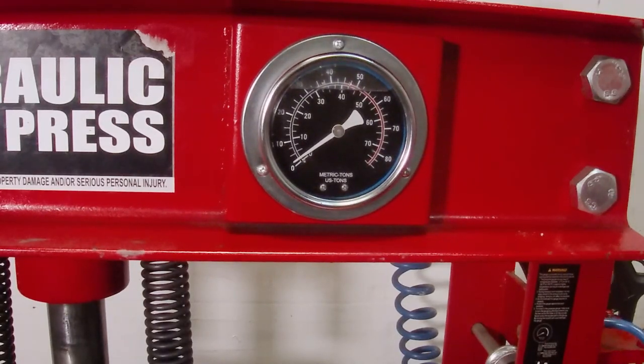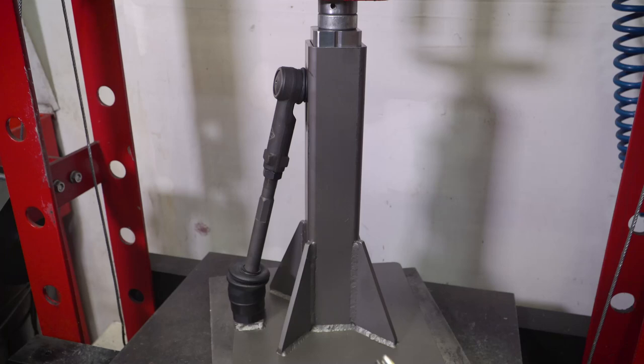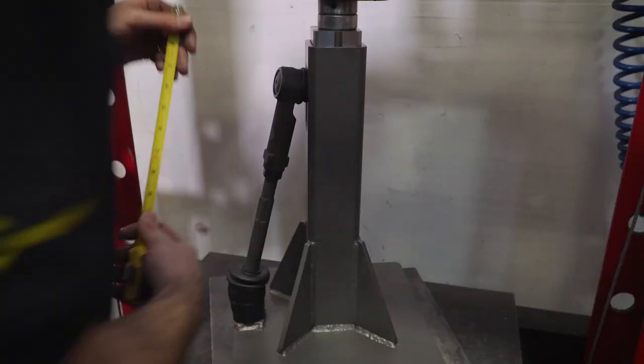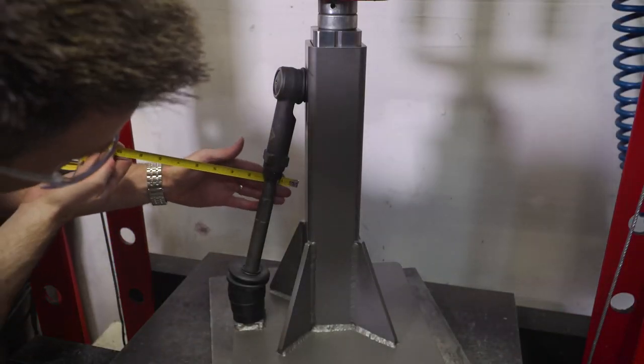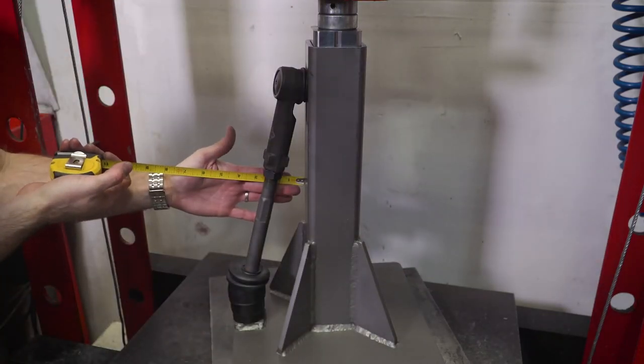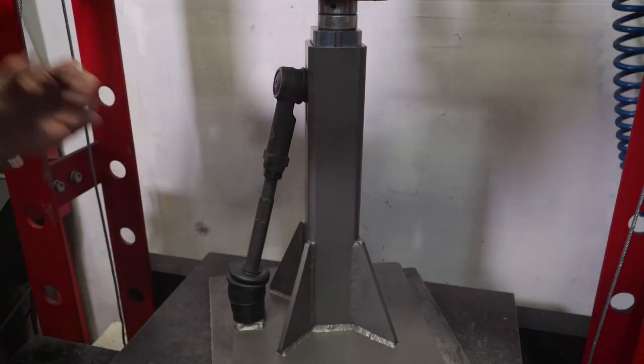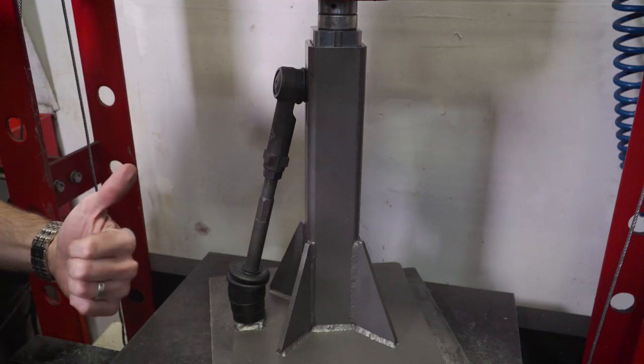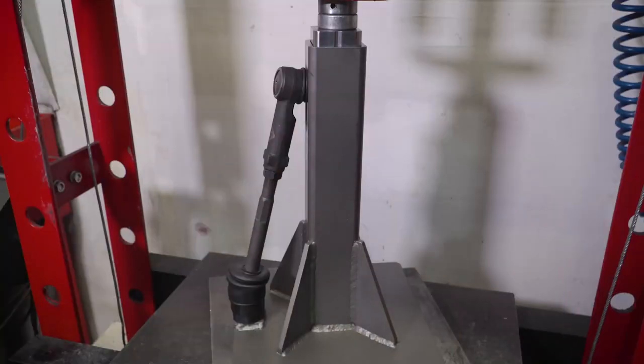So here's that two and a half tons that we put on the stock replacement one. And we saw some elastic deformation. We'll check this one out. I'll jump past here. And we are sitting at the exact same point. We have not seen any deformation, elastic or plastic at all at this point. That's good news. All right. Let's keep going.